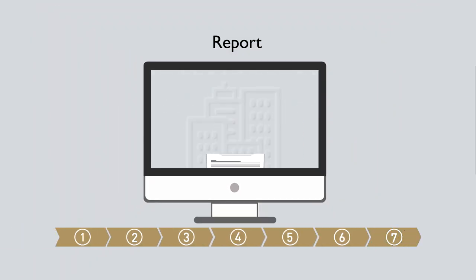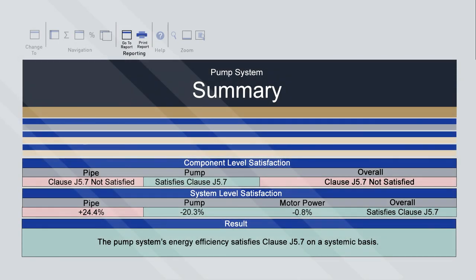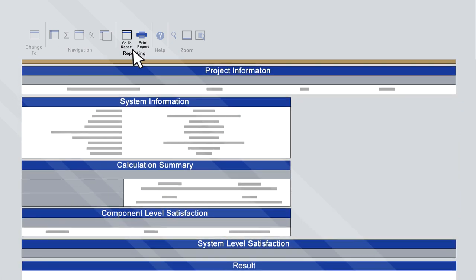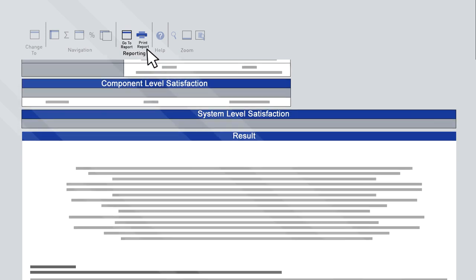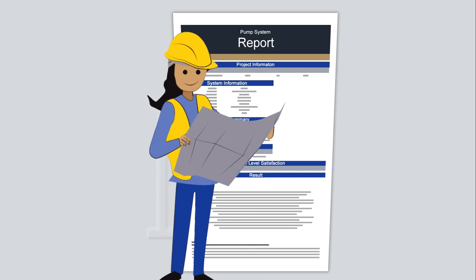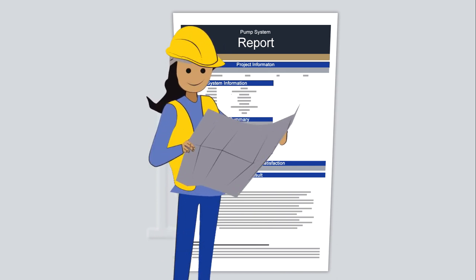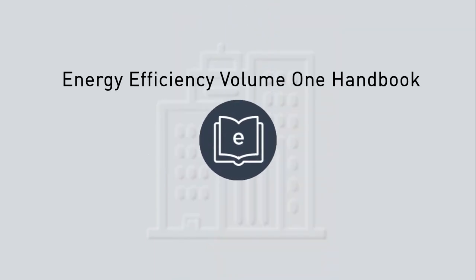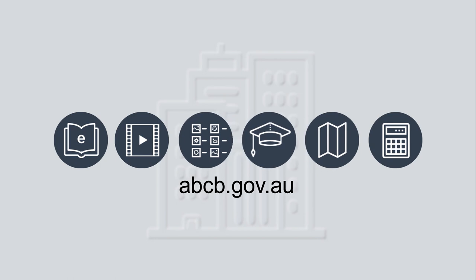Step 7: Report the results. The calculator can generate a report summarising the results. On the ribbon, click Go to Report to view it or Print Report to print it. Remember, this information needs to be checked and verified against the design documentation for compliance assessment. Further details about the Pump System Calculator, including additional examples, are provided in the Energy Efficiency Volume 1 Handbook and other resources from the ABCB website.